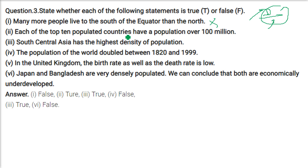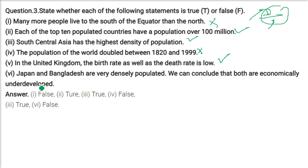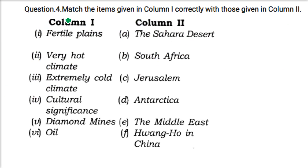Each of the top 10 populated countries has a population over 100 million — this is true. South Central Asia has the highest density of population — this is true. The population of the world doubled between 1820 to 1999 — this is false. In the United Kingdom, the birth rate as well as the death rate is low — true. Japan and Bangladesh are very densely populated; we can conclude that both are economically underdeveloped — this is false. Japan is a developed country, while Bangladesh is still developing.